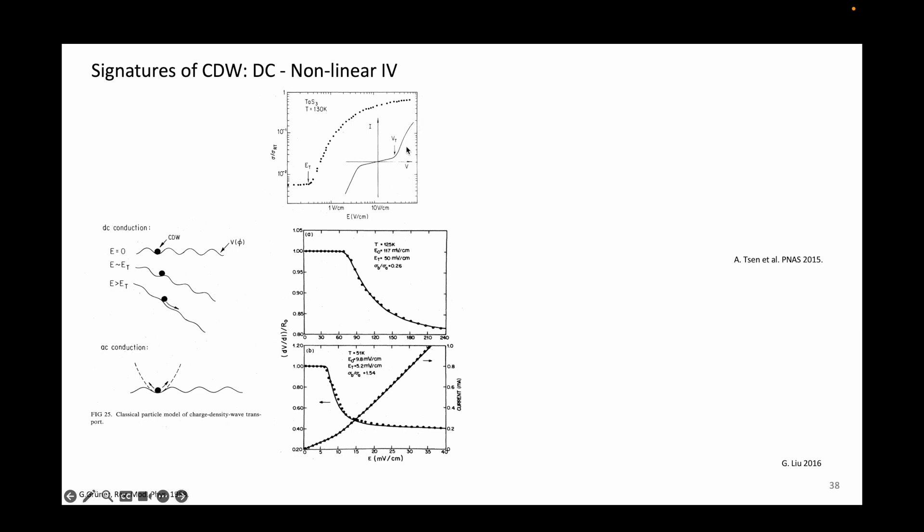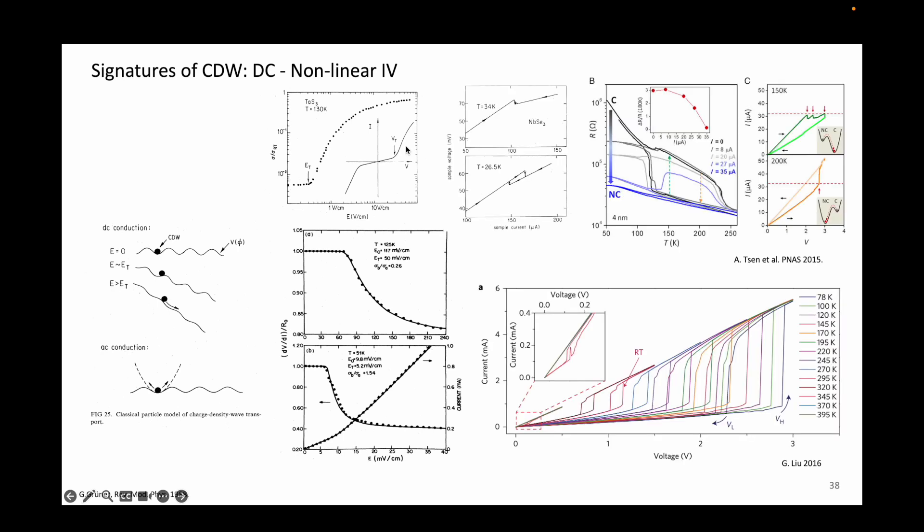Another feature to look for in a system with more than one charge density wave state is a hysteresis in the IV due to competition. As you can see, especially in 1T tantalum disulfide, the hysteresis in the IV becomes larger as you go from room temperature down to the lower temperatures.